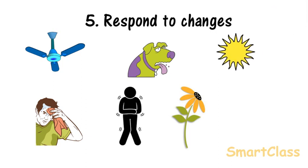For example, the sunflower plant moves to face the sun. Non-living things cannot sense changes and cannot respond.